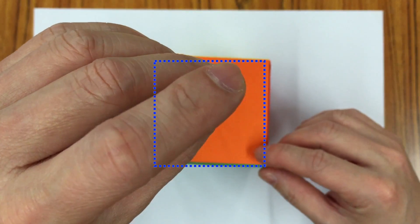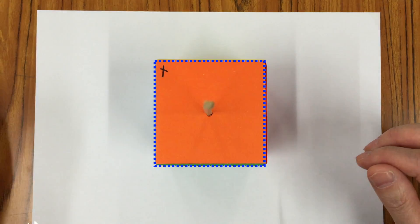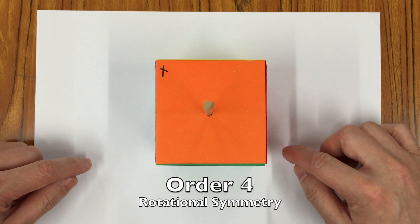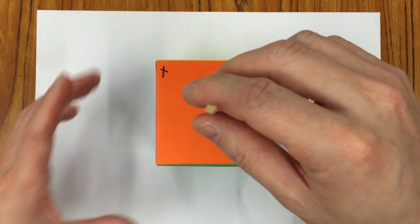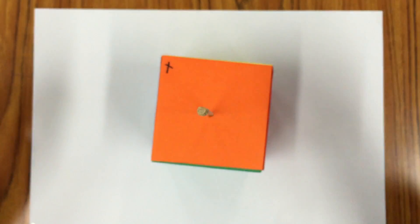And finally, 360 degrees, it will overlap with itself again. So this will be an order four of rotational symmetry.